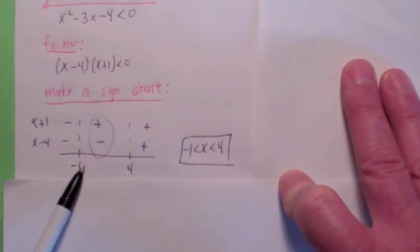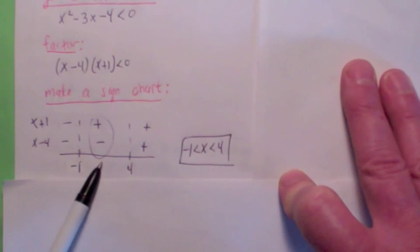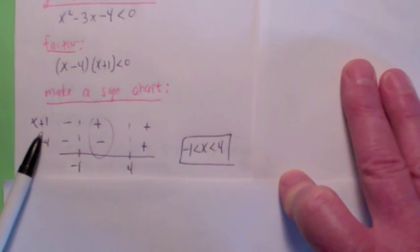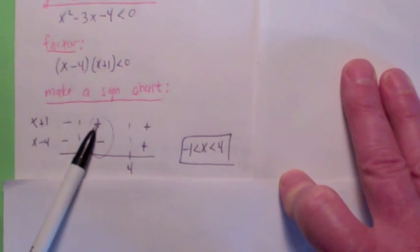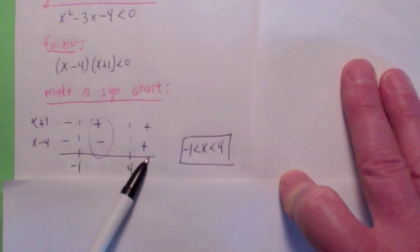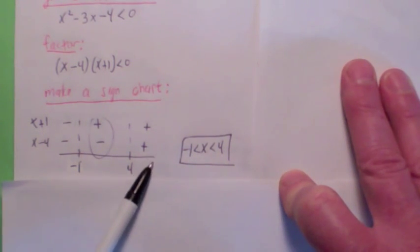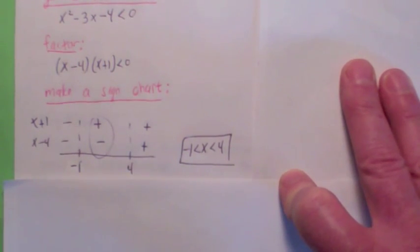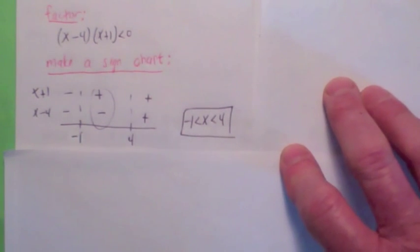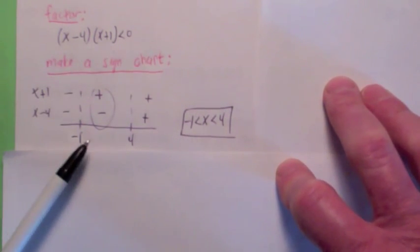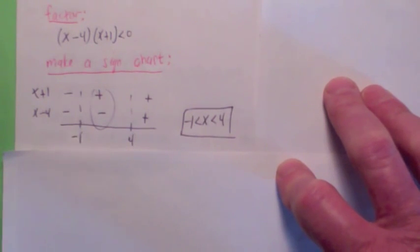Let's pick a number between negative 1 and 4, like zero. When you plug in zero into the first factor, you get negative 4, which is negative. When you plug in zero into the second, you get 1, so this factor is actually positive from negative 1 to 4. Then pick a number to the right of 4, like 10 — they're both positive. So the question is, in which region do they have opposite signs? The answer is between negative 1 and 4.